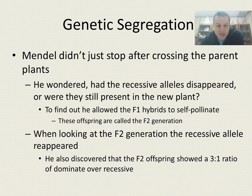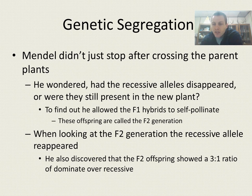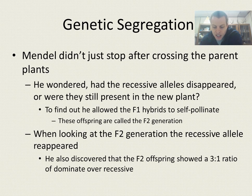Mendel discovered that the F2 generation offspring showed about a three-to-one ratio of dominant to recessive traits — so three green pods to every one yellow pod. The recessive trait had shown back up. He had not seen any yellow in the F1 generation, but they reappeared in the F2 generation, and that's what he was trying to figure out.